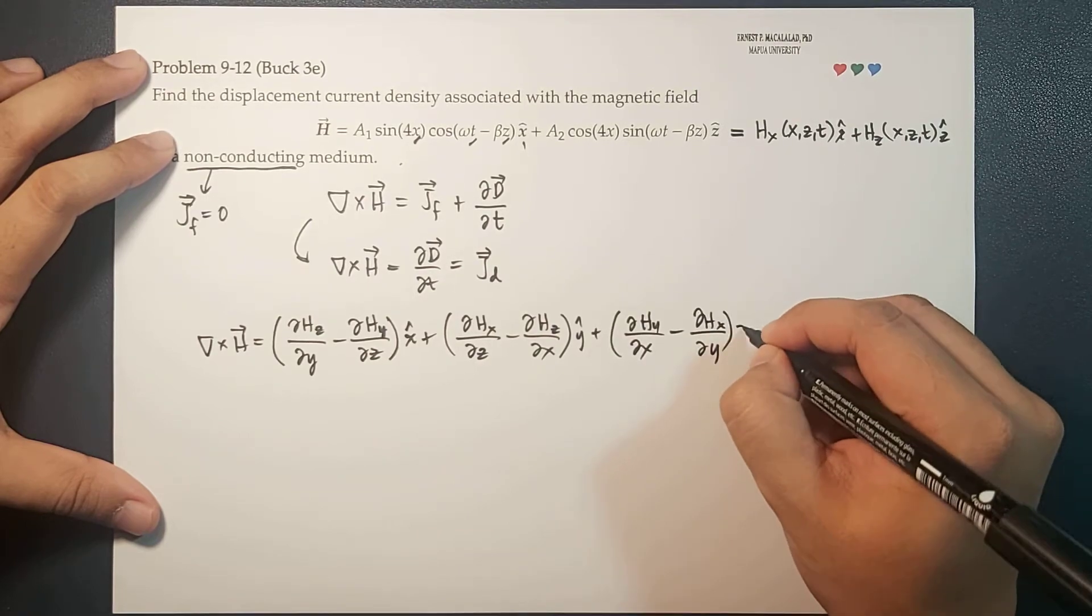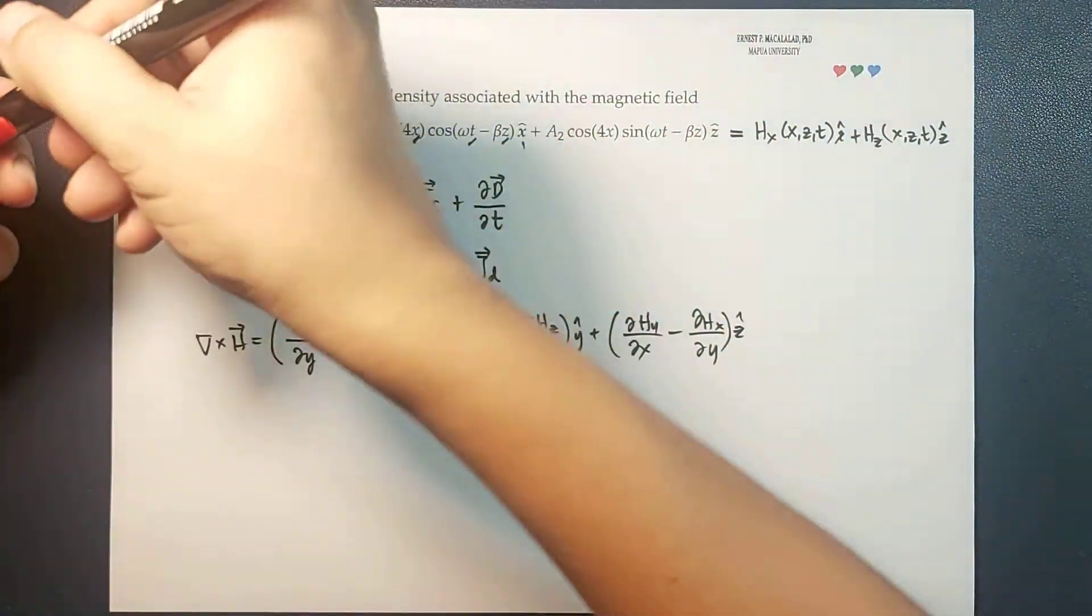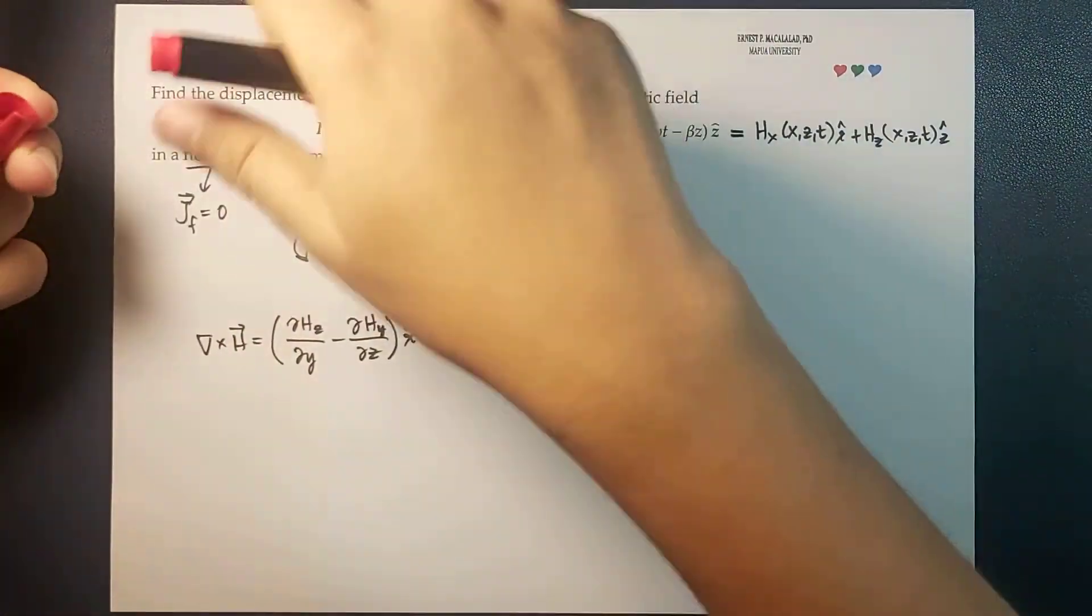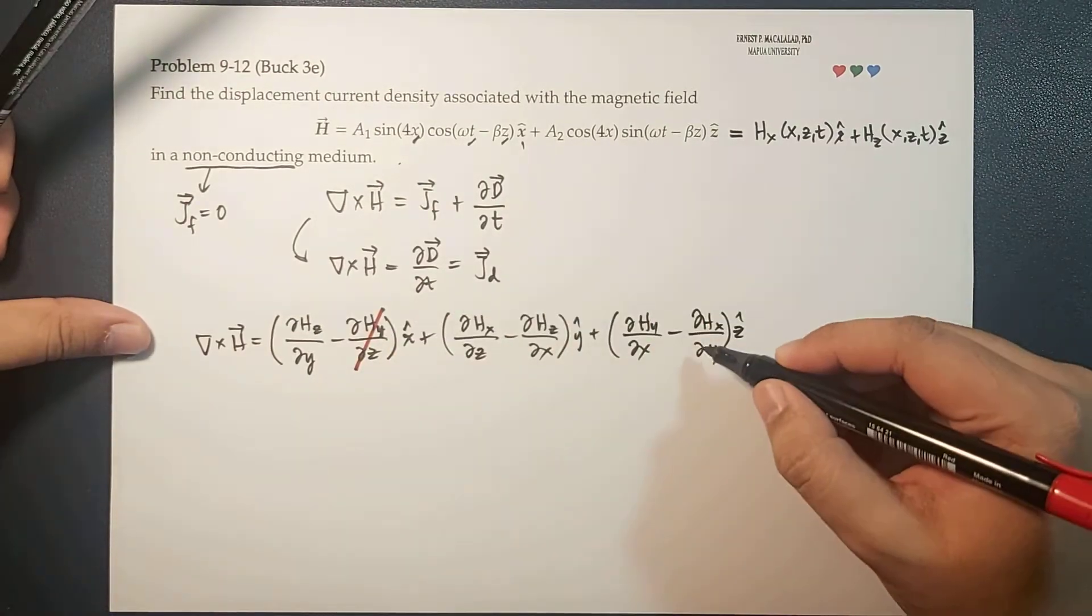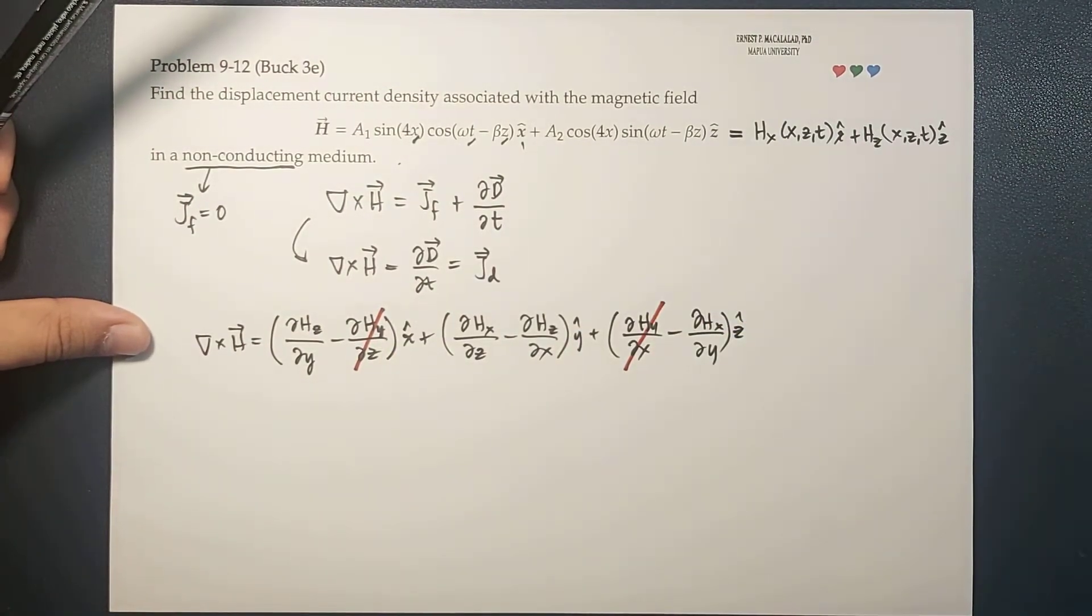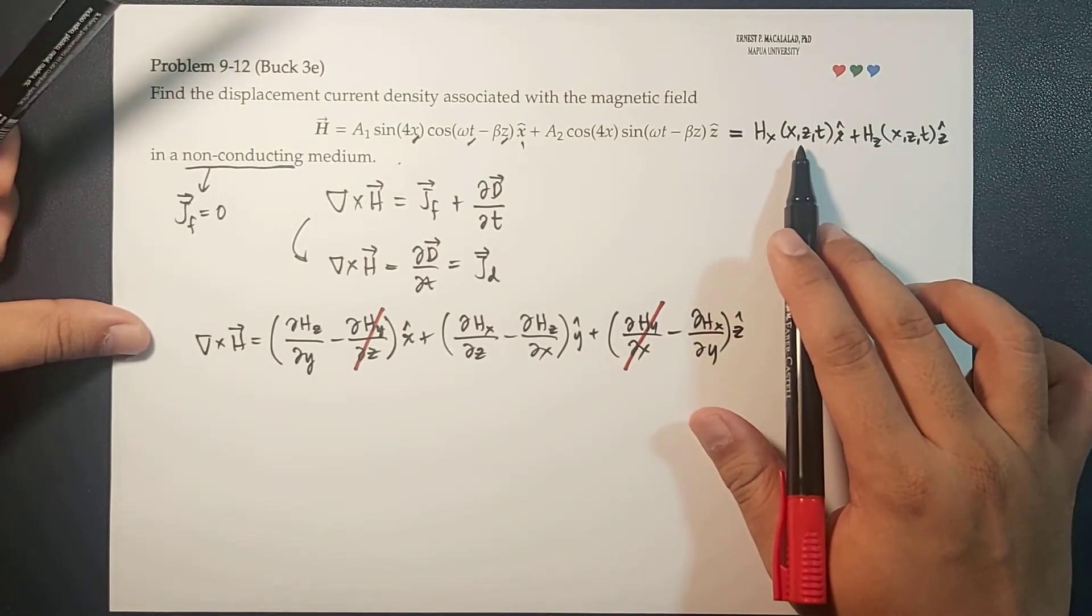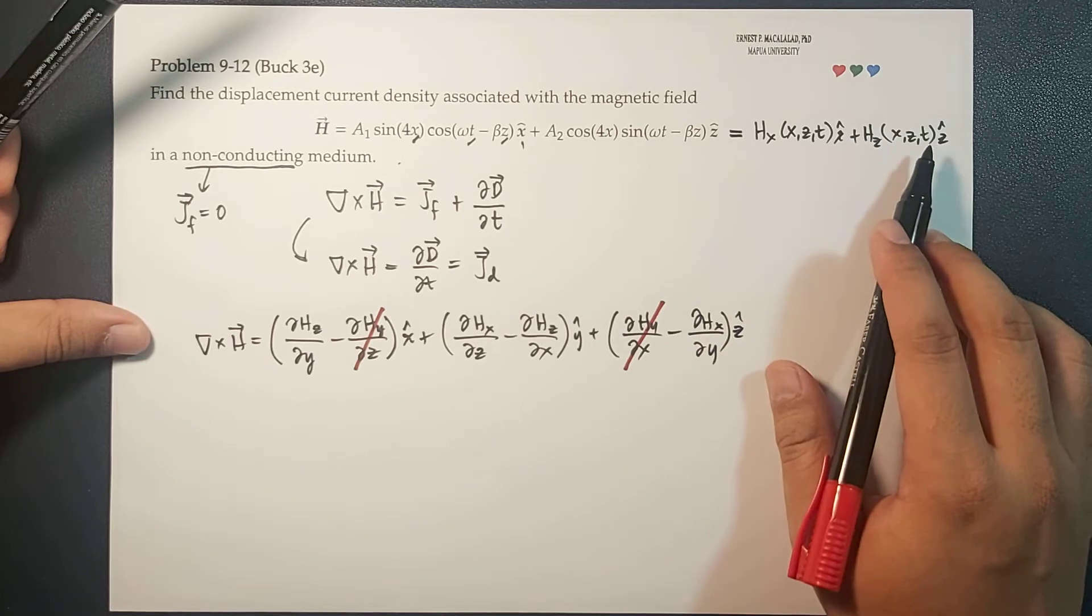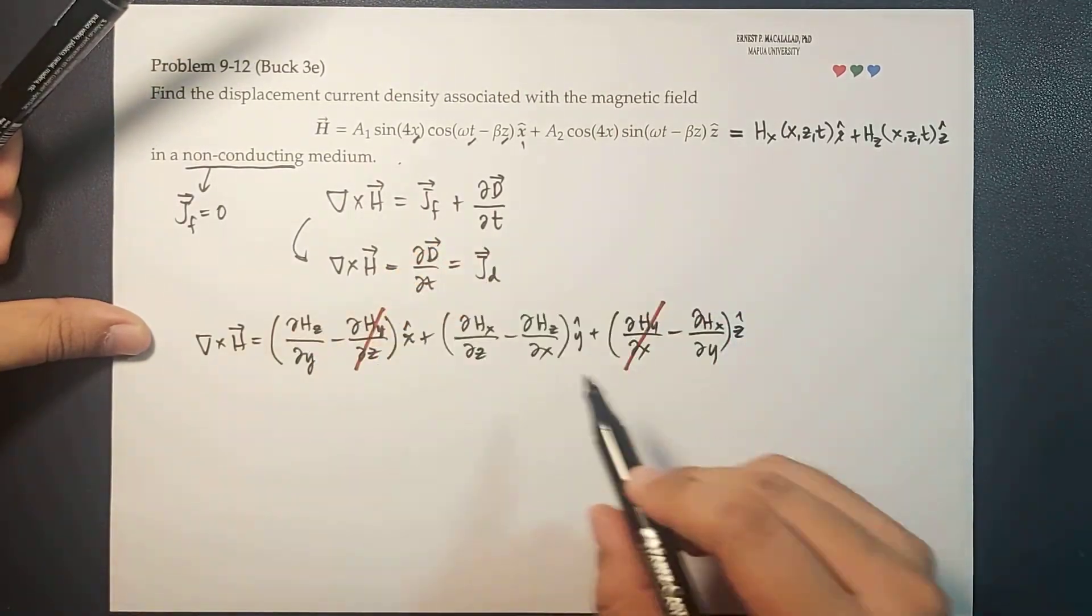with respect to y, times z-hat. From our setup earlier, you can see that there is no Y component, so these terms will cancel. Also, the X and Z components don't have a dependence on the Y coordinate, so all partial derivatives with respect to y